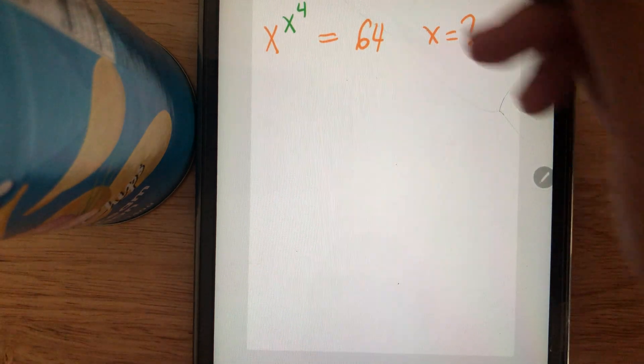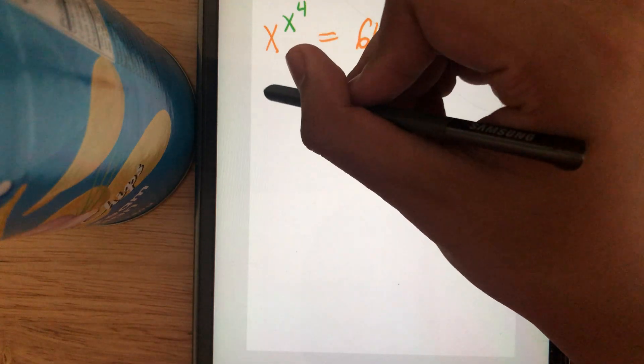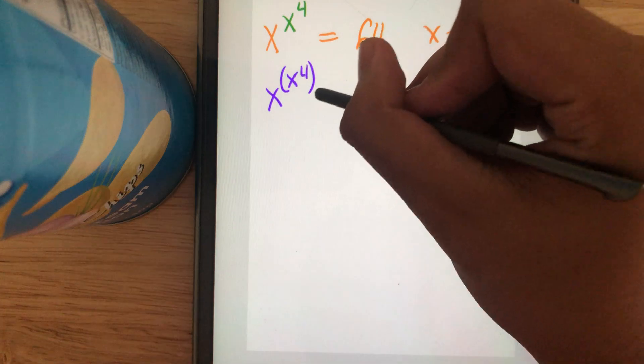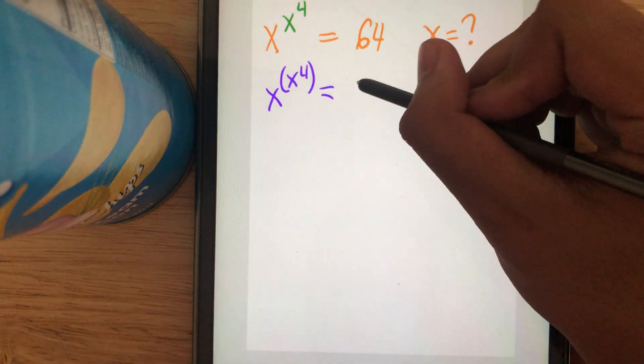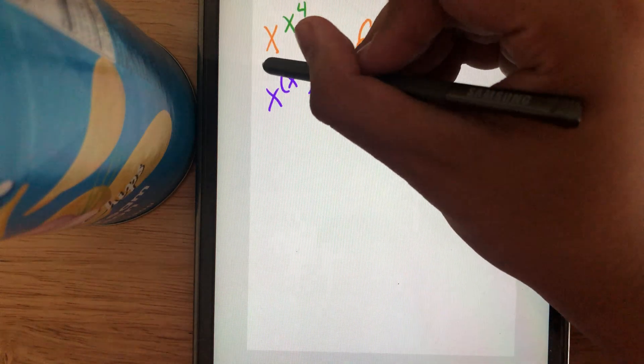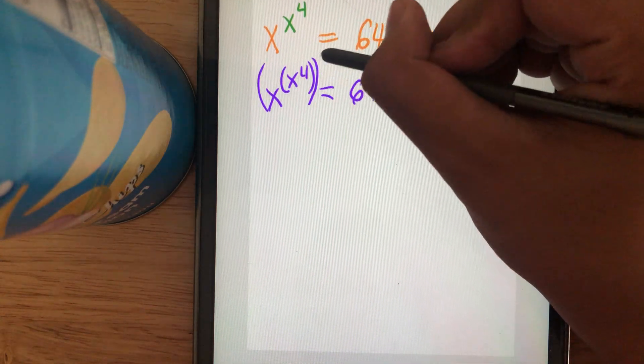We can copy down the equation x^(x^4) = 64. We can take the power of 4 on both sides.